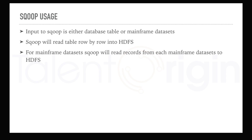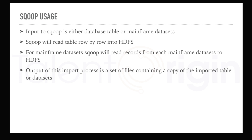For mainframe systems, Sqoop will read records from each mainframe dataset into HDFS or Hadoop. The output of this import process is a set of files containing a copy of the imported table or dataset. As Sqoop works in parallel, with multiple mappers running when a Sqoop job is triggered, multiple files will be created when writing data into HDFS. So while the source may be one dataset or one table, multiple files will be created in the target directory because Sqoop runs in a distributed, parallel way.